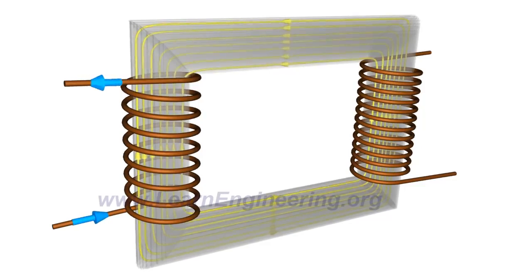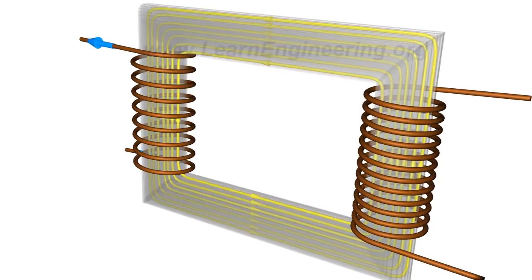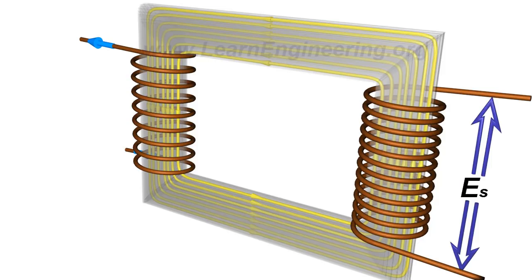This fluctuating magnetic field will induce an EMF in the secondary coils due to electromagnetic induction.